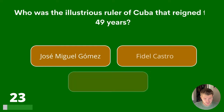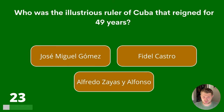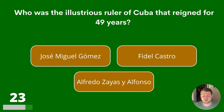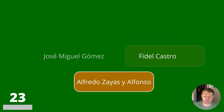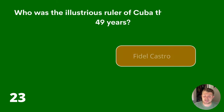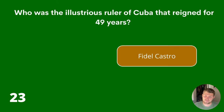Question 23. Who was the illustrious ruler of Cuba that reigned for 49 years? Jose Miguel Gomez, Fidel Castro or Alfredo Zayas y Alfonso? The answer is Fidel Castro.